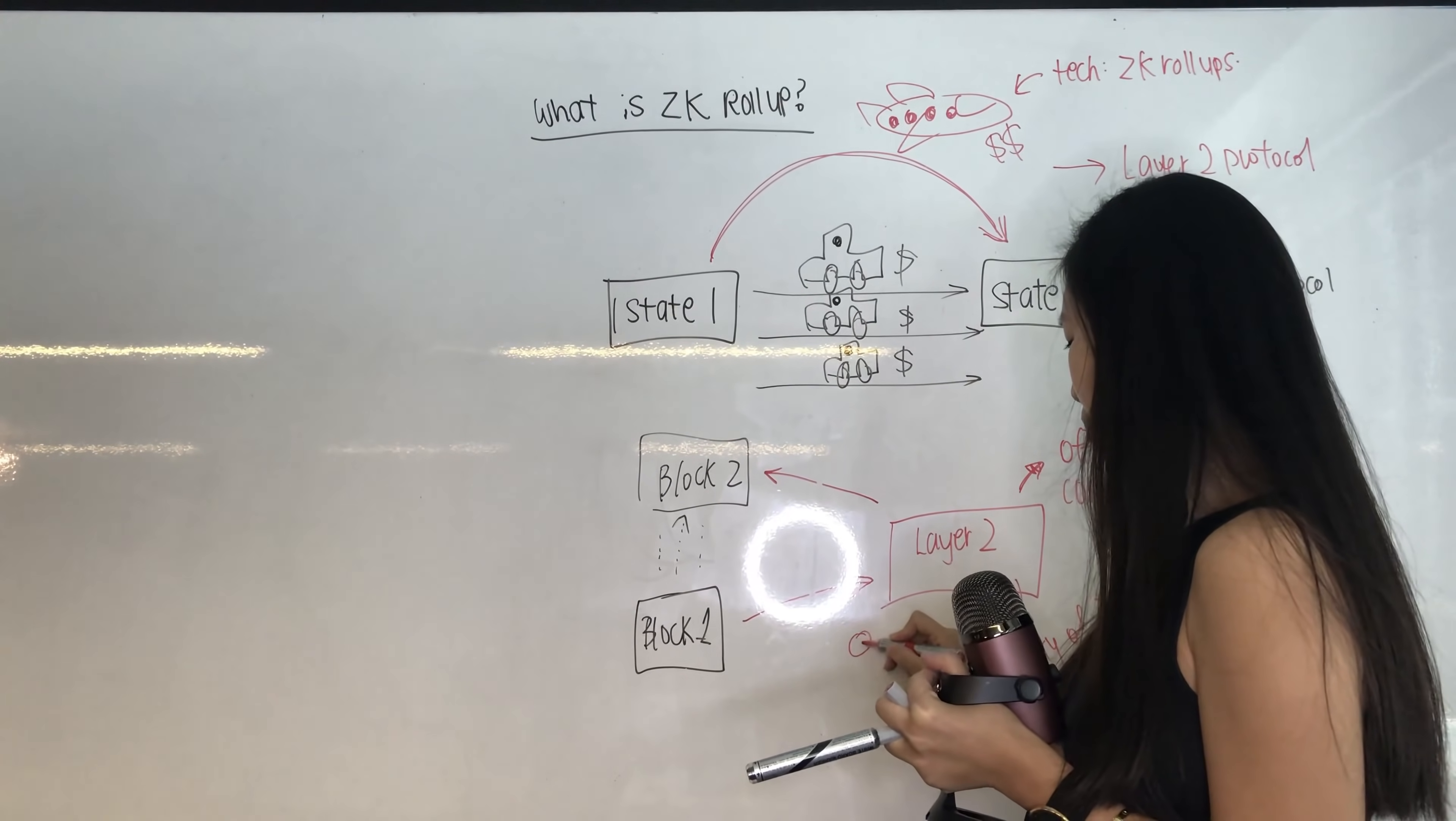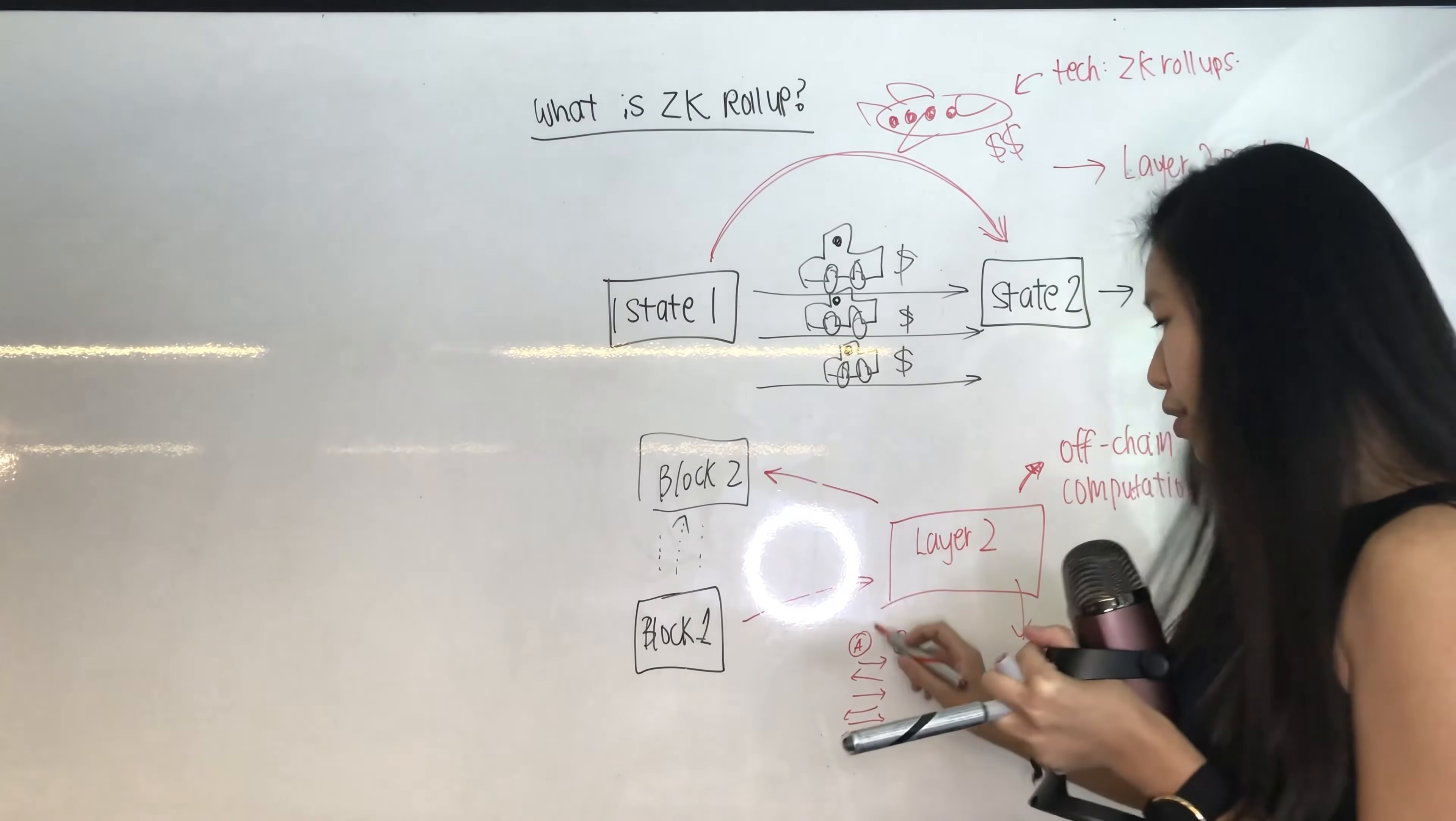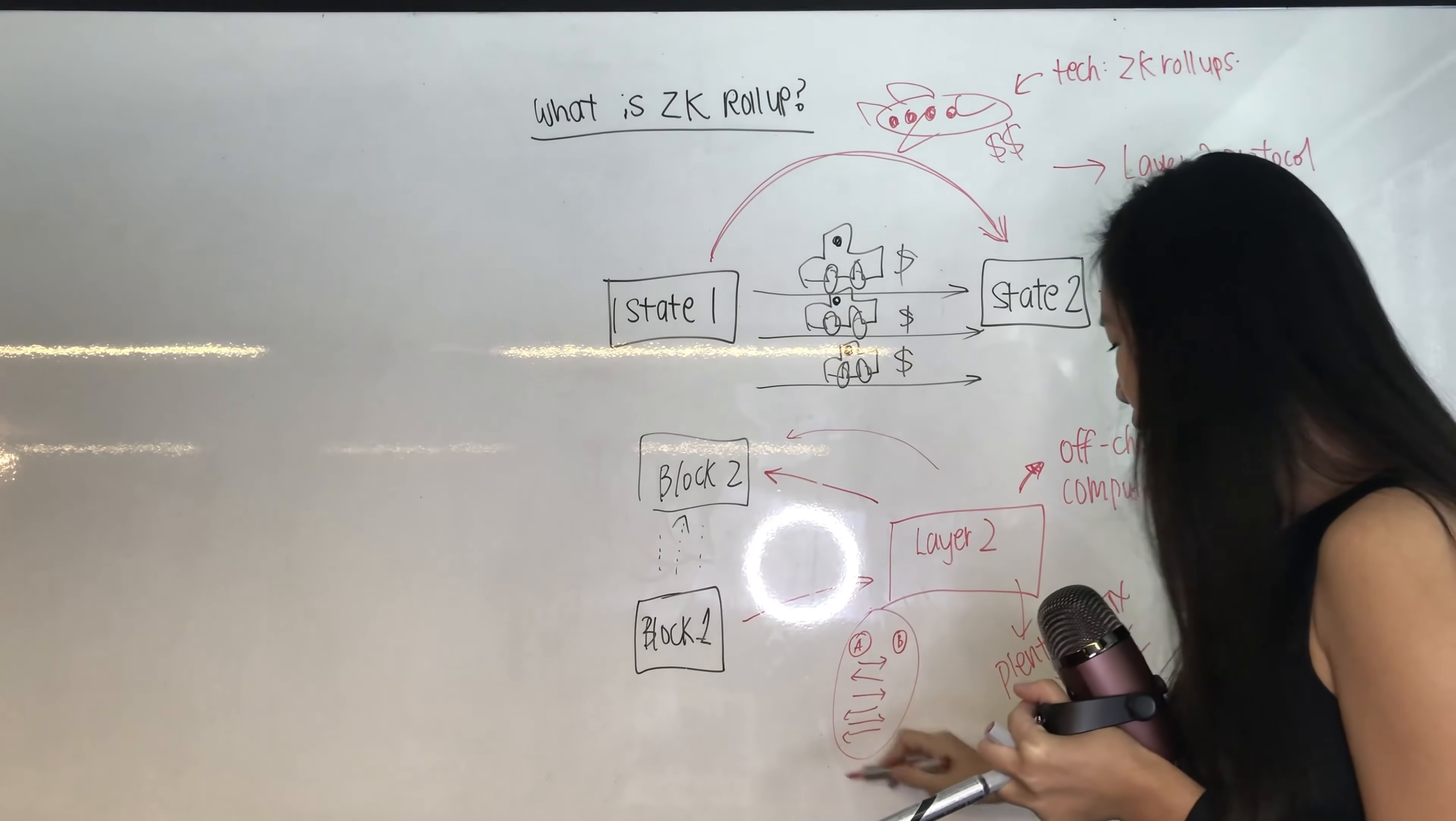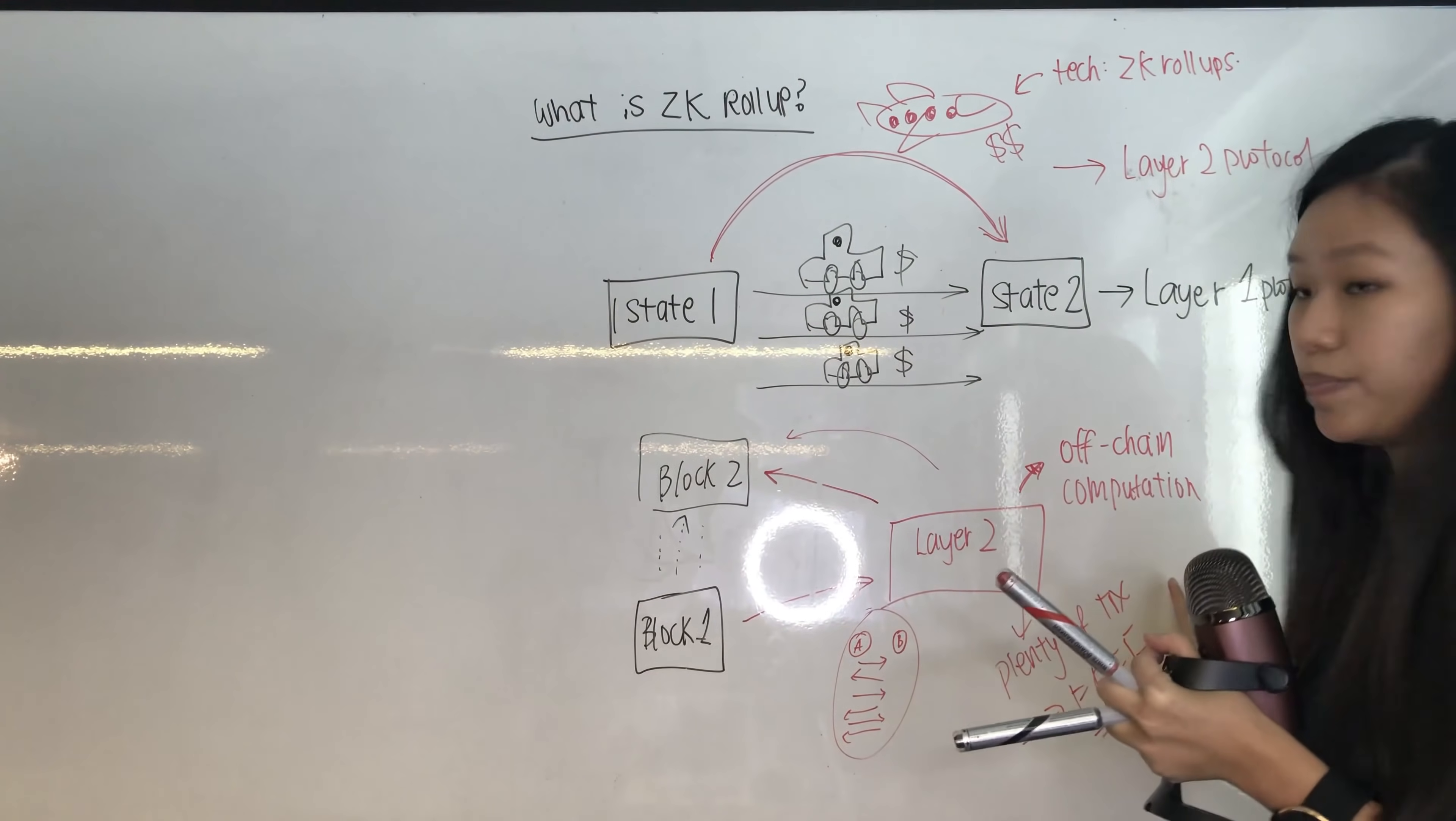So it could be something like you have person A and person B both existing on layer two. I'm sending money to you, you're sending money to me, we're sending money to each other for whatever reasons. And then at the end of the month we consolidate all of these and then we update it in block two. We update it in one of the blocks on the main chain. So that's how layer two works. And this aggregating, the whole idea of aggregating is the ZK rollups. So that's how ZK rollups is applied in this entire system. And this layer two is basically done off chain.